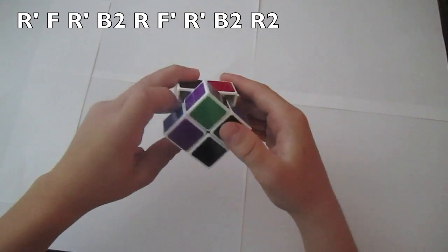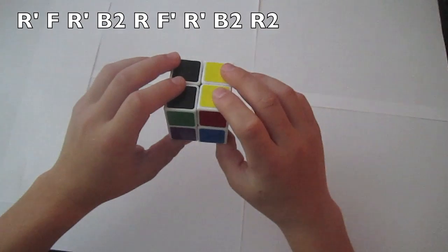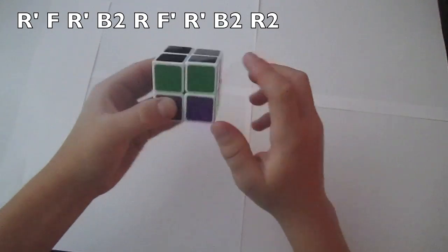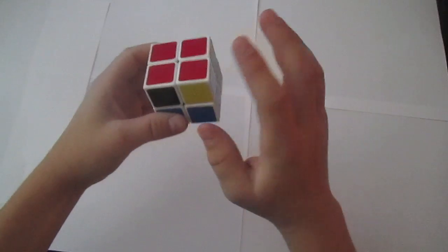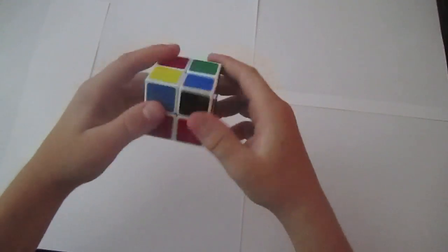Then you just turn that, and you have two in the front. So you put them right in the front where you are, and let's do the other algorithm.